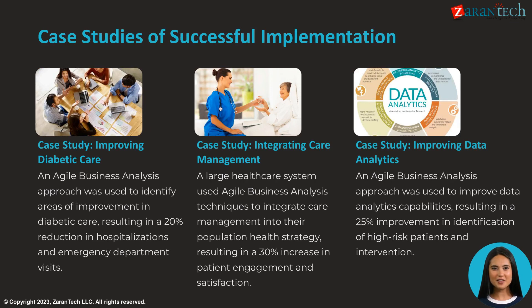Here is an example of agile business analysis in population health management. A large healthcare system used agile techniques to improve care for diabetic patients. Through data analysis and an iterative approach, they reduced hospitalizations and ER visits by 20%. In another case study, a health system employed agile analysis methods to integrate care management and build a comprehensive population health strategy. This drove a 30% increase in patient engagement and satisfaction scores.